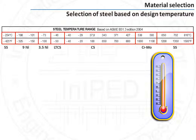This shows the material selection as per the usual piping code, showing that stainless steel will go up to minus 254 degrees Celsius. And if one needs to go, for example, at a temperature of 800 degrees Celsius, one has to also use stainless steel.